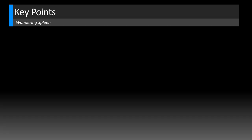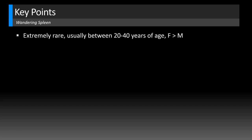Here are some key points for wandering spleen, which you can also find in the episode show notes. This is an extremely rare diagnosis. It usually occurs in patients between 20 to 40 years of age and is more common in females. This patient was actually a 30-year-old female, so she fits into that demographic.